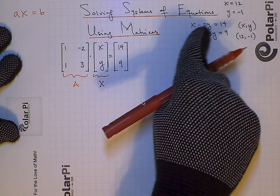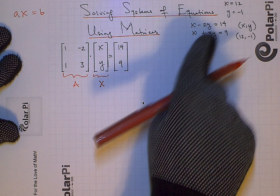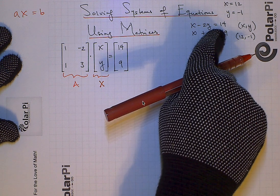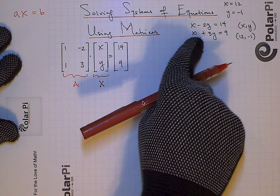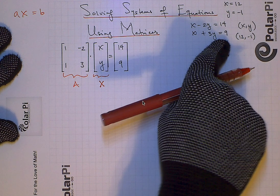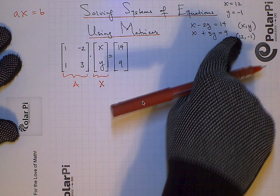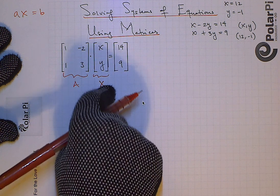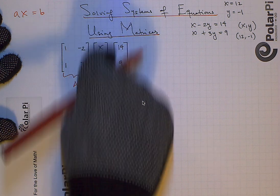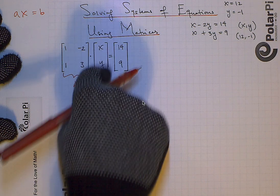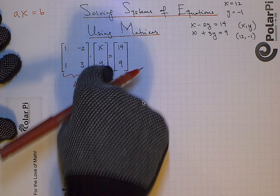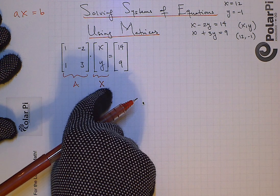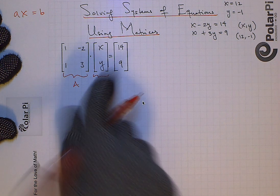If I so chose, I could have written this equation with x1 minus 2x2 equals 14, and x1 plus 3x2 equals nine, without involving a y at all. So it makes sense that if I so chose, I can have this variable matrix be x1 and x2. Therefore, just refer to it as a bold x.